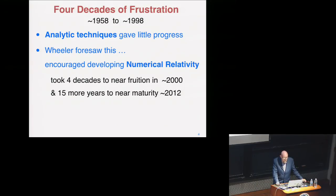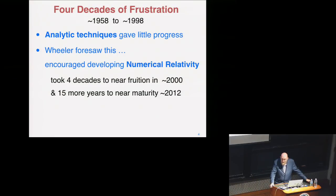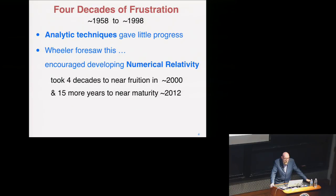We struggled and didn't make much progress. John understood it would be extremely hard to make progress analytically, so he urged his students to begin developing techniques for numerical simulations — numerical solutions of Einstein's equations. After I got my PhD, I called his home and spoke to his very formal wife Jeanette, who said, 'Now Kip, you defended your PhD yesterday. Now you may call him Johnny.'